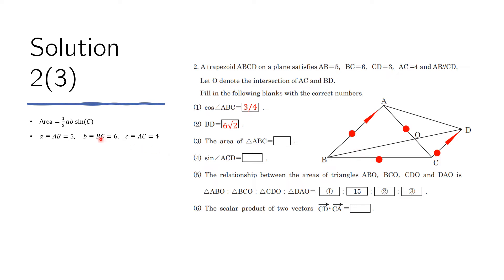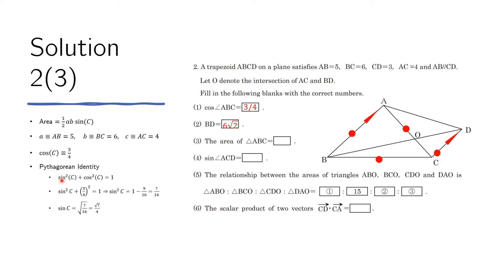Let side A be AB = 5 and side BC = 6, and AC = 4. The cosine of angle ABC is 3/4. Using the Pythagorean identity, sine² + cosine² = 1, we get sine²(ABC) = 1 − 9/16 = 7/16, so sine(ABC) = √7/4. Plugging into the area formula gives area of triangle ABC = 15√7/4.